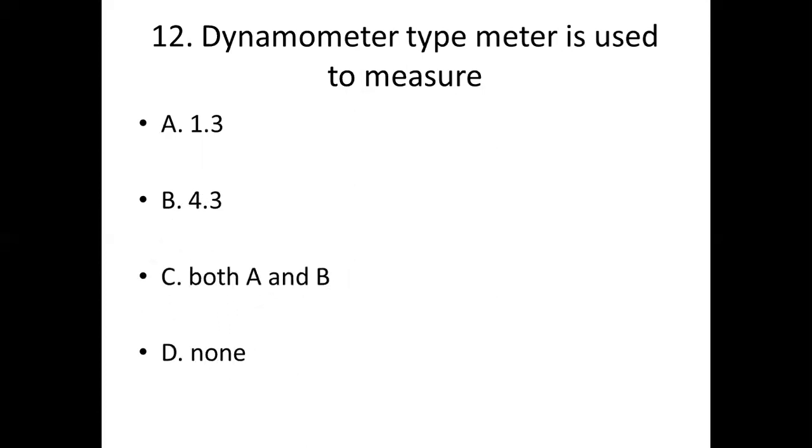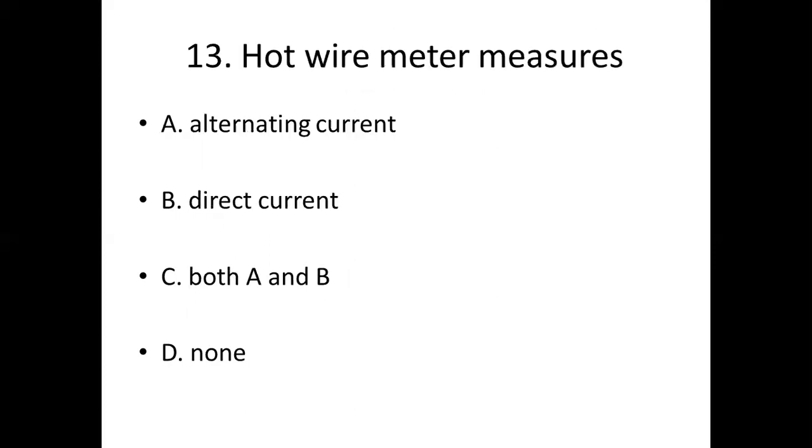Thirteenth bit. Hot wire meter measures: Option A, alternating current; Option B, direct current; Option C, both A and B; Option D, none. Answer is A, alternating current.